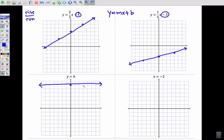So it could be 0, 6. It could be 3, 6, 5, 6, negative 2, 6. All of those have a y-coordinate of 6. Okay. So y equals 6 is the set of all points that have a y-coordinate of 6.